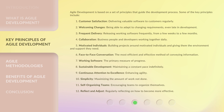4. Collaboration — business people and developers working together daily. 5. Motivated individuals — building projects around motivated individuals and giving them the environment and support they need. 6. Face-to-face conversation — the most efficient and effective method of conveying information. 7. Working software — the primary measure of progress.